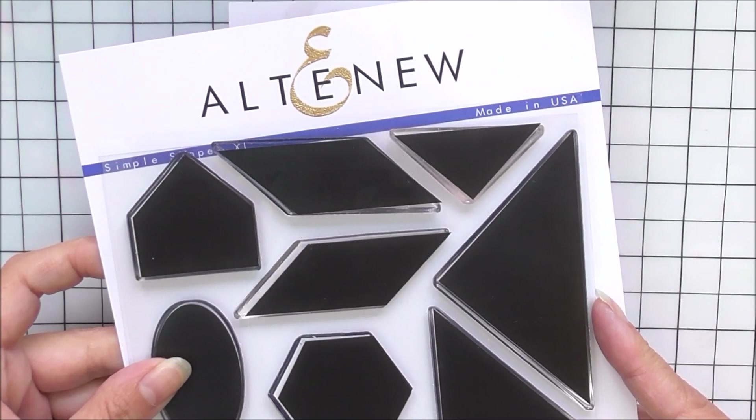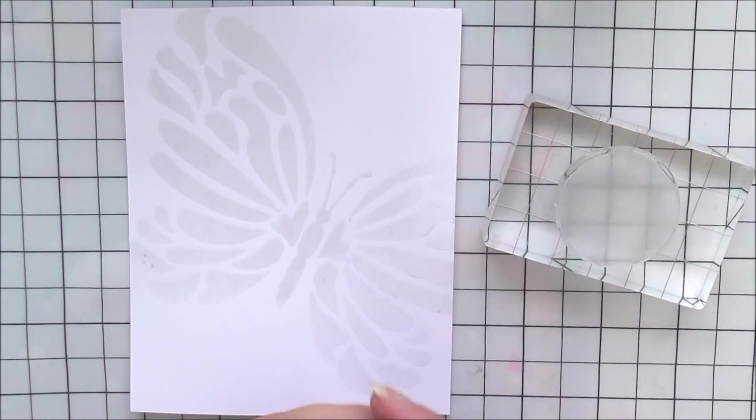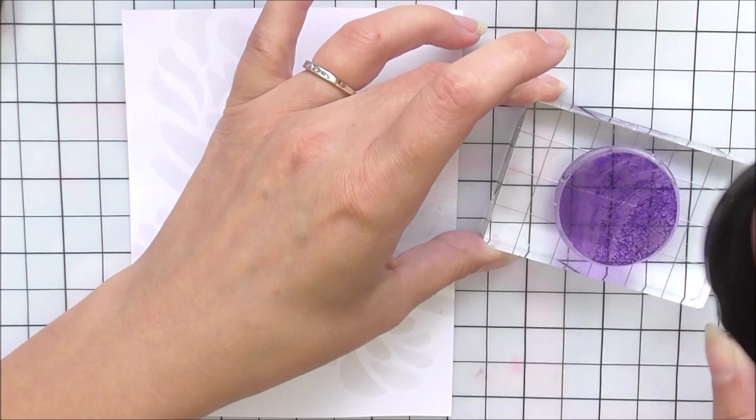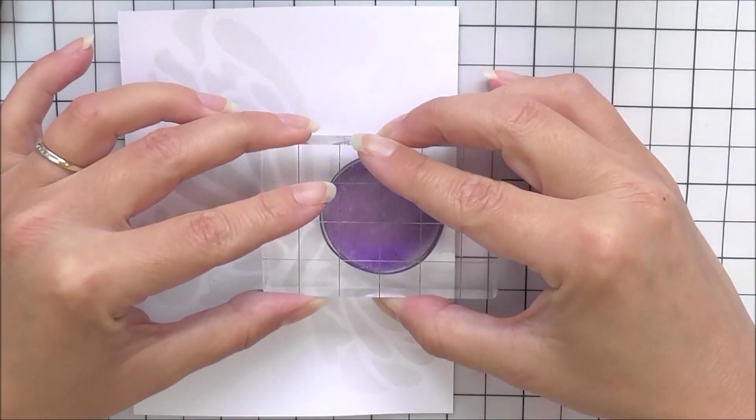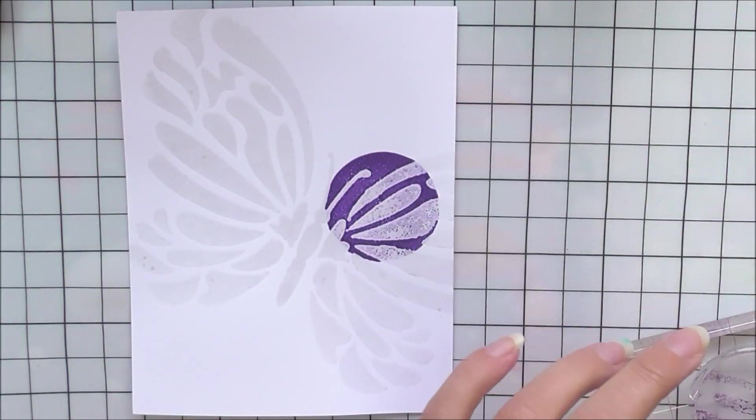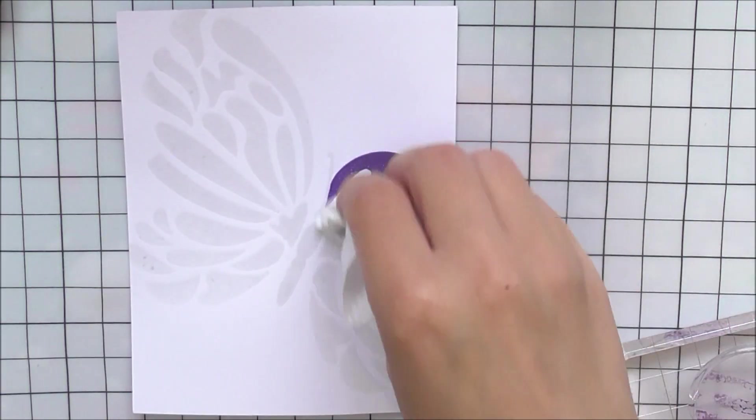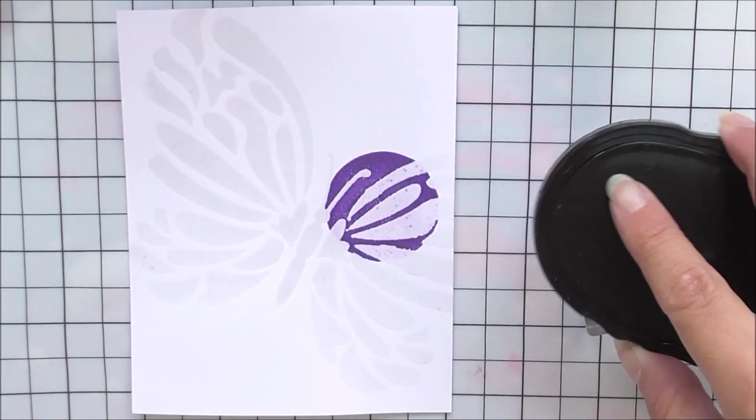Then I'm going to move on to my third panel, and I decided to actually stamp these in. I'm using Simple Shapes XL and I'm just using the circle from this. You could use whatever shape that you wanted to. Maybe a smaller shape—it would give you a more defined outline if you used a smaller shape, but I've decided to go for a big one.